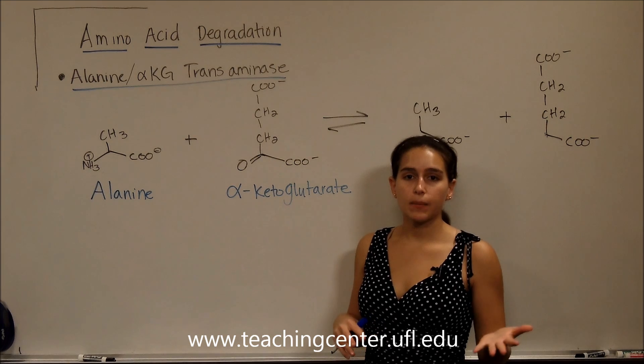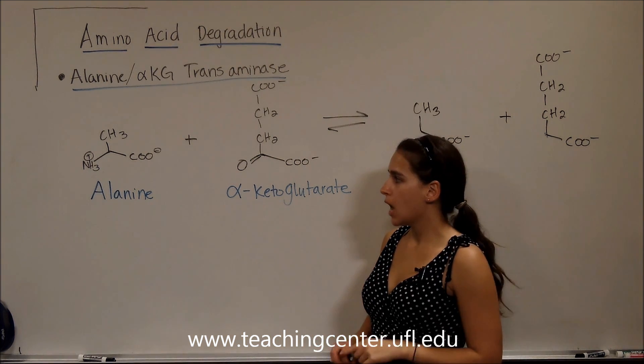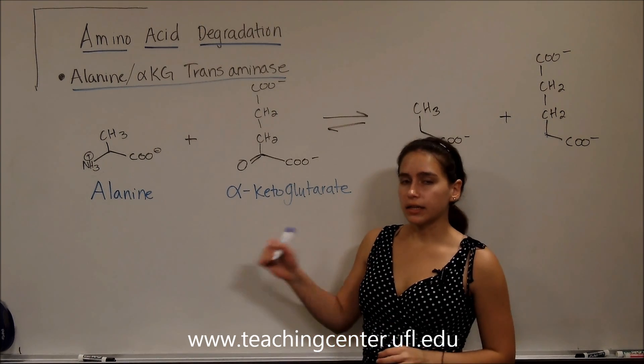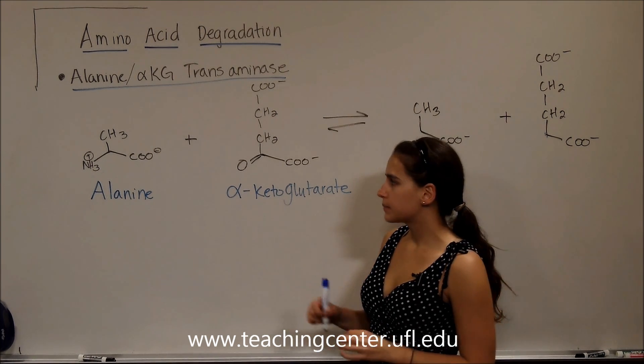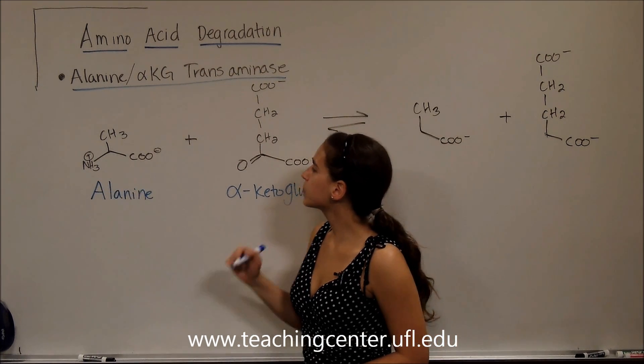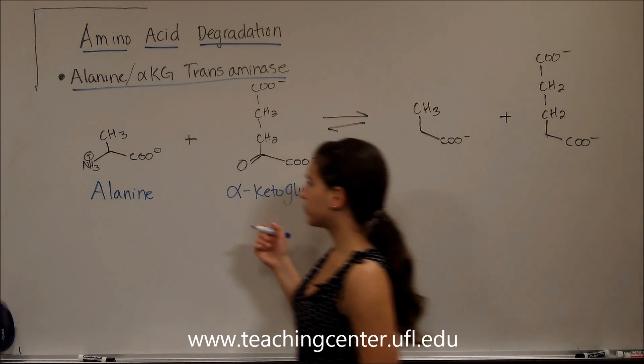Now that we know the basic mechanism for transaminases and some basic structures, we can look at a specific example. This is the alanine alpha-ketoglutarate transaminase. Here, we have alanine with its amino group and alpha-ketoglutarate with its carbonyl group, or double bond O.